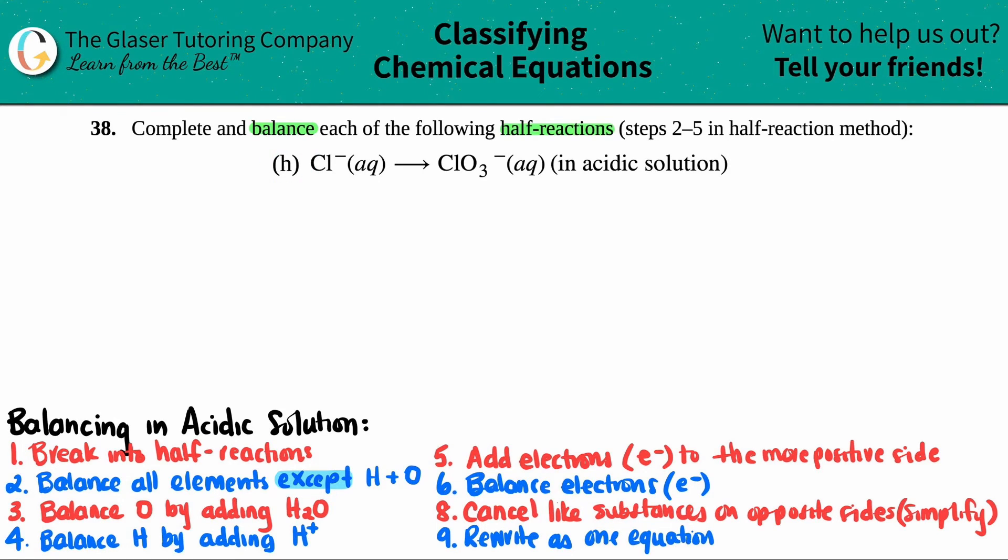So in this case, we have to balance Cl minus, and that's aqueous, yields, I believe this is chlorate ion, ClO3 minus aqueous. And we have to do this in acidic solution.